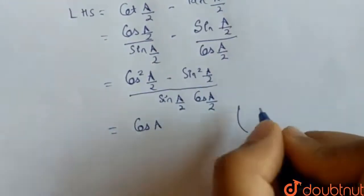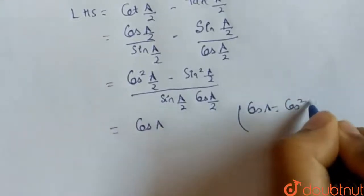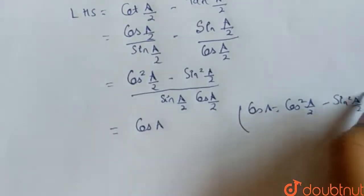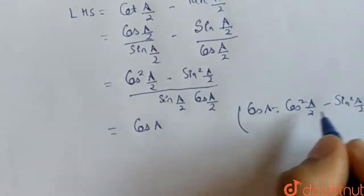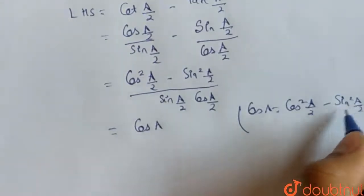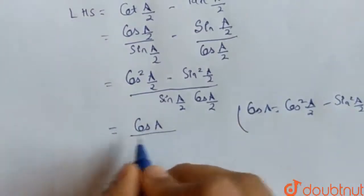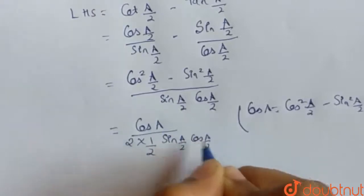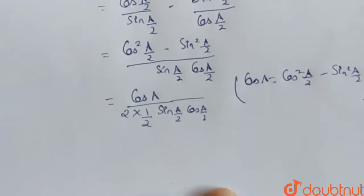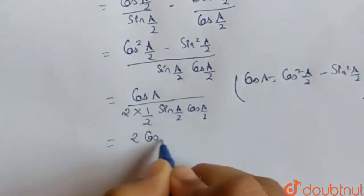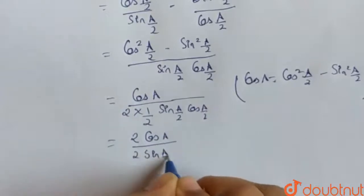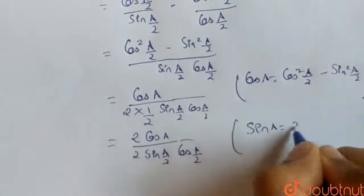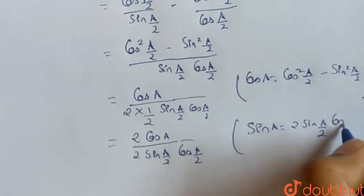We know the identity cos(a) = cos²(a/2) minus sin²(a/2), so we replace the numerator with cos(a). We then multiply and divide by 2, giving 2·cos(a) over 2·sin(a/2)·cos(a/2). We know that sin(a) = 2·sin(a/2)·cos(a/2), so we apply this identity.